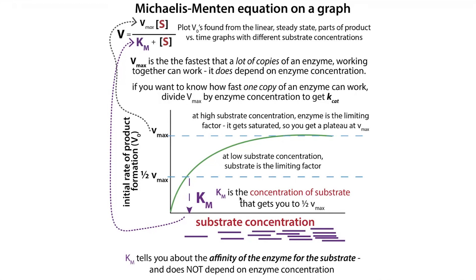We have our Km, which is the concentration of substrate that gets you to half of the maximum velocity. The lower the Km, the higher the affinity — but it's not just affinity; we'll talk about those complications. And then you have your Kcat, which is your turnover rate — you're actually converting the substrate into product.